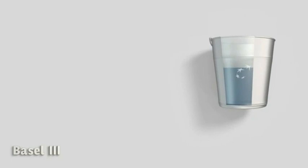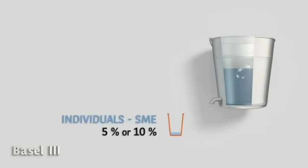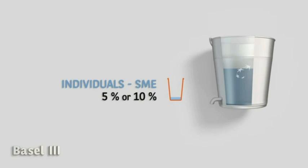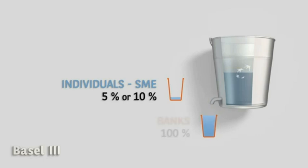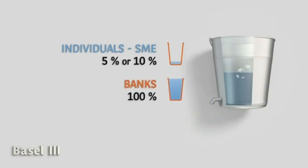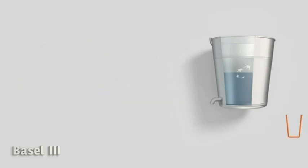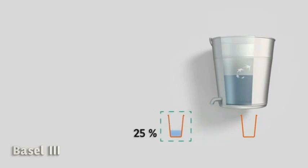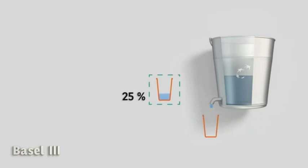Let's have a look at the treatment of deposits. The first category is deposits from individuals and from small and medium-sized companies. Basel III states they leave the bank at 5% or 10% — so during the 30-day stress period, 5 or 10% of those deposits will basically walk out the door. For deposits received from banks, the runoff percentage is at 100%, meaning they will leave completely before the end of the stress test. A third category exists: deposits from corporates, where a very important notion is introduced by Basel III.